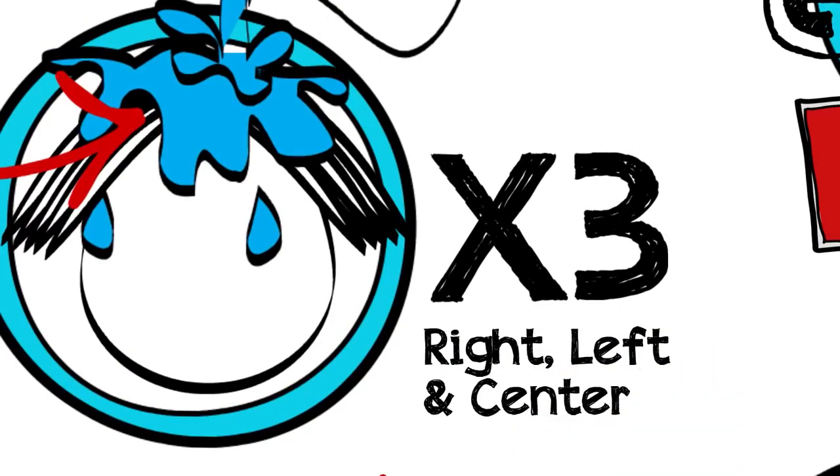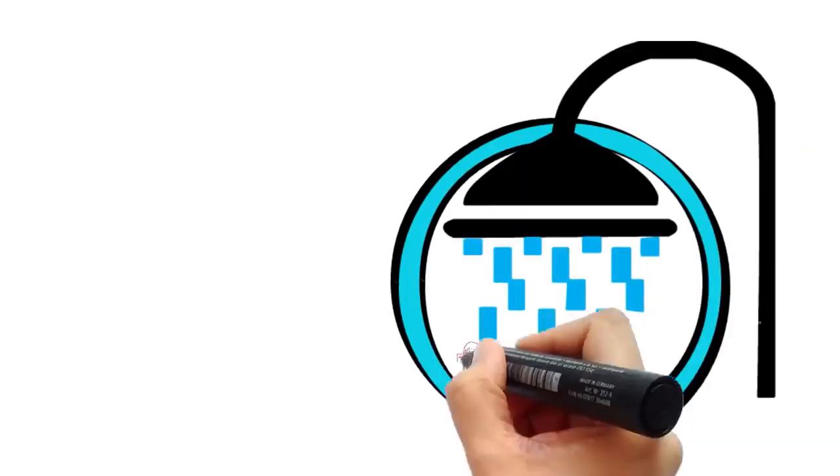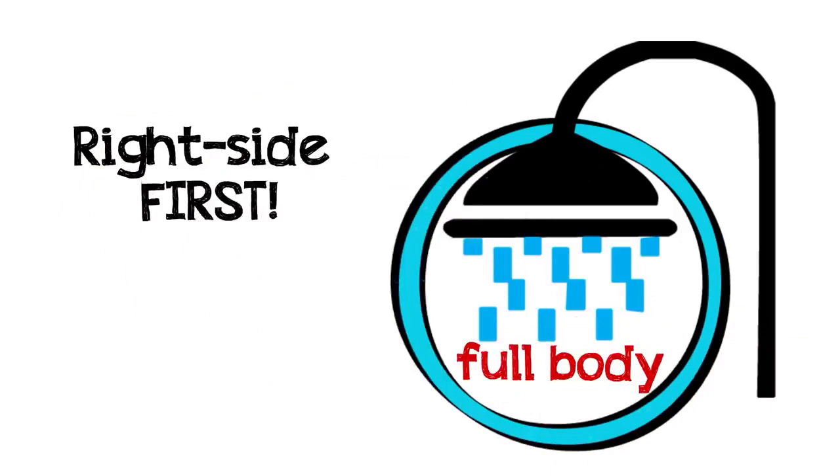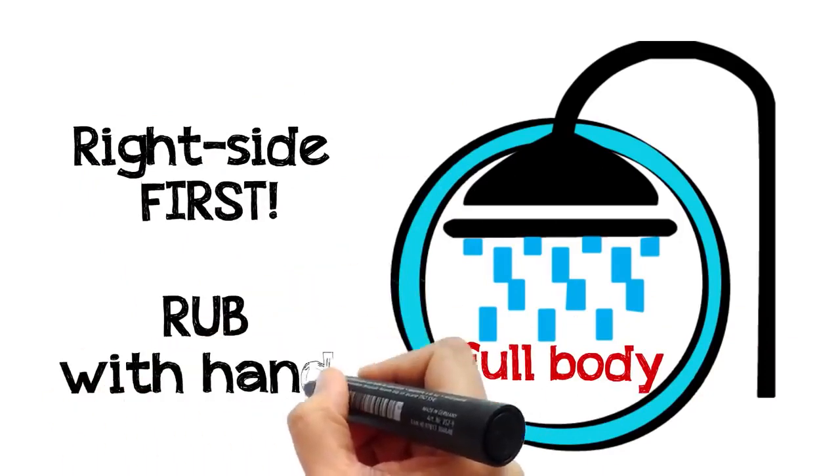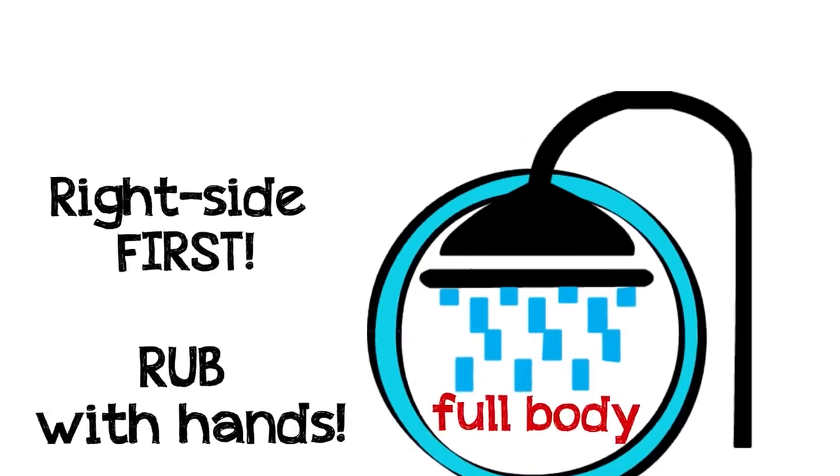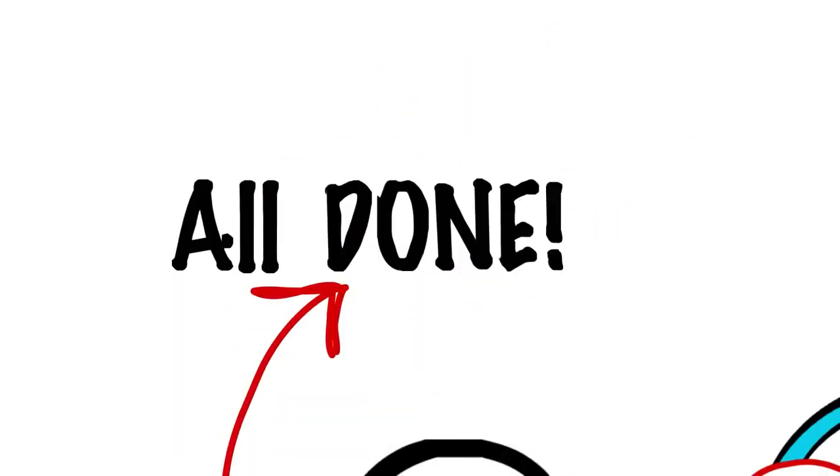And then pour water and wash the entire body, beginning with the right side then the left, while rubbing it with your hands so that you are sure you haven't missed any part. So these are the etiquettes of the complete ghusl.